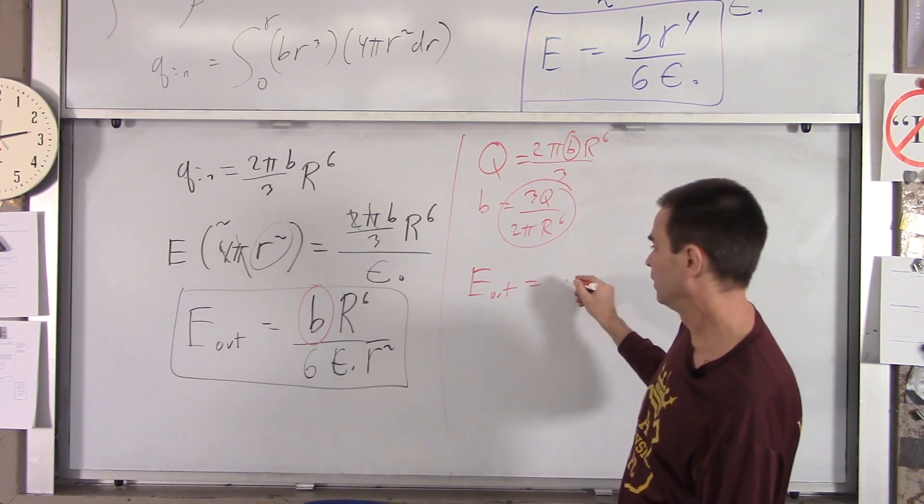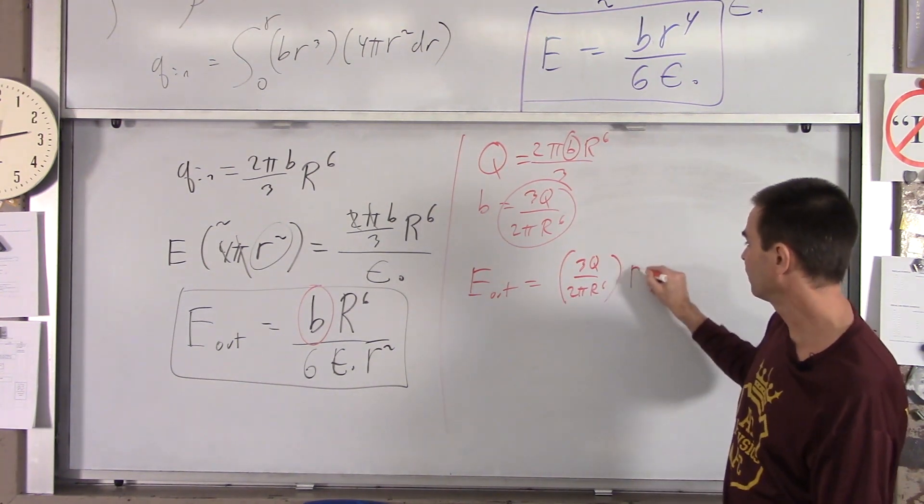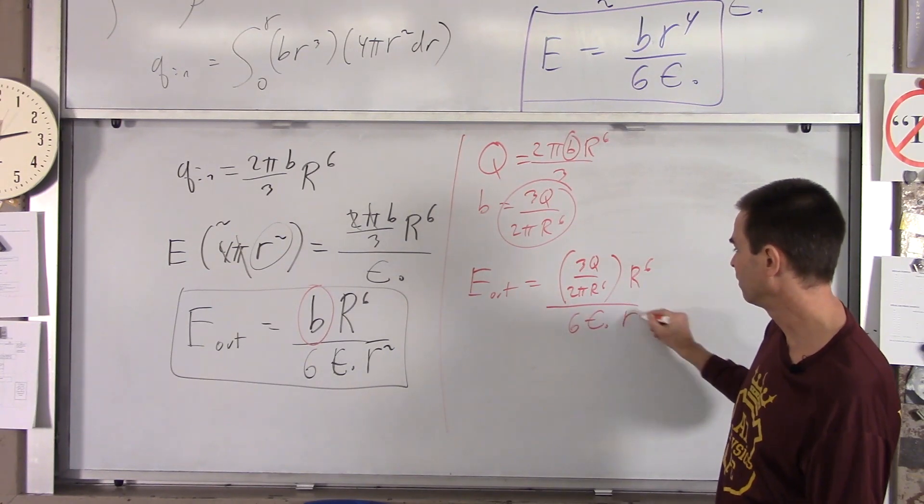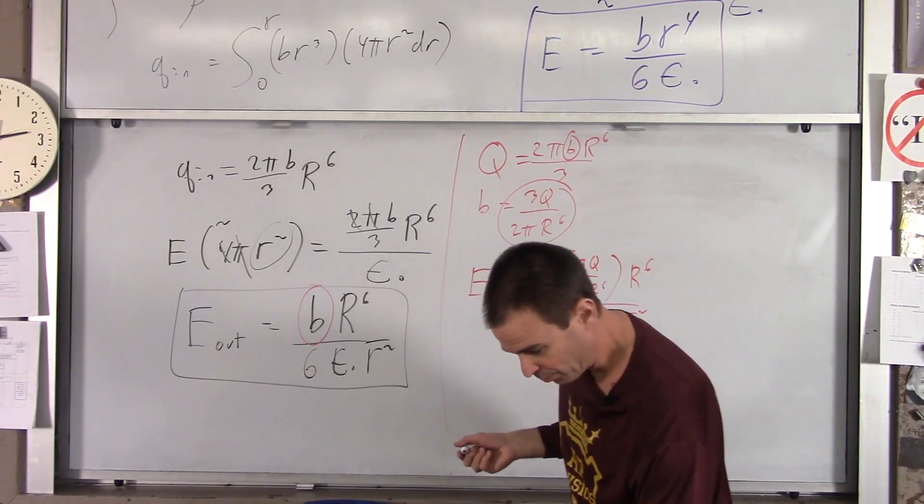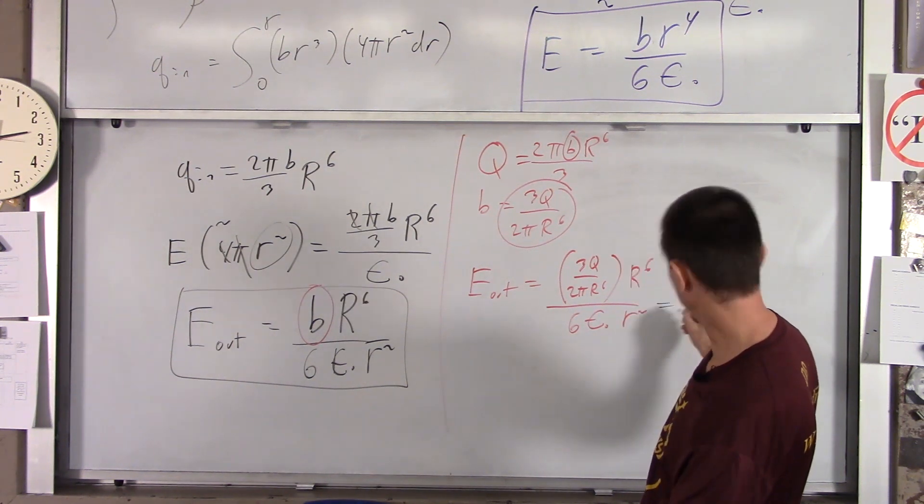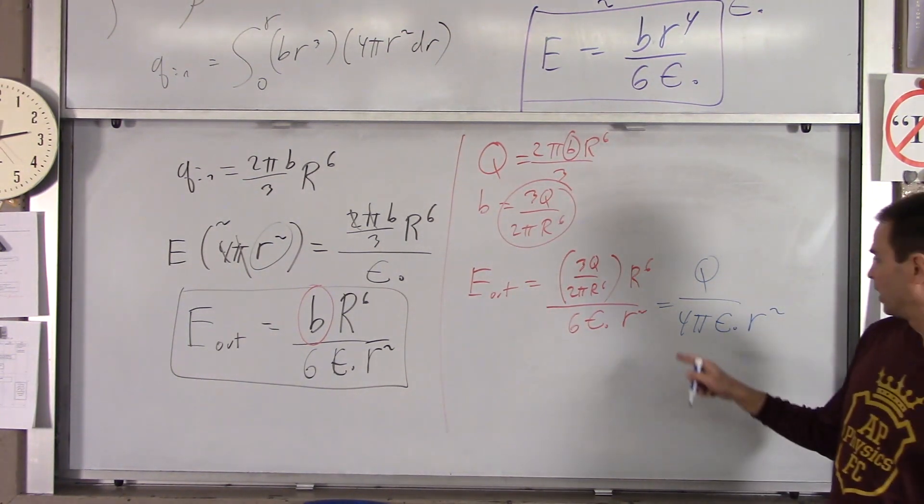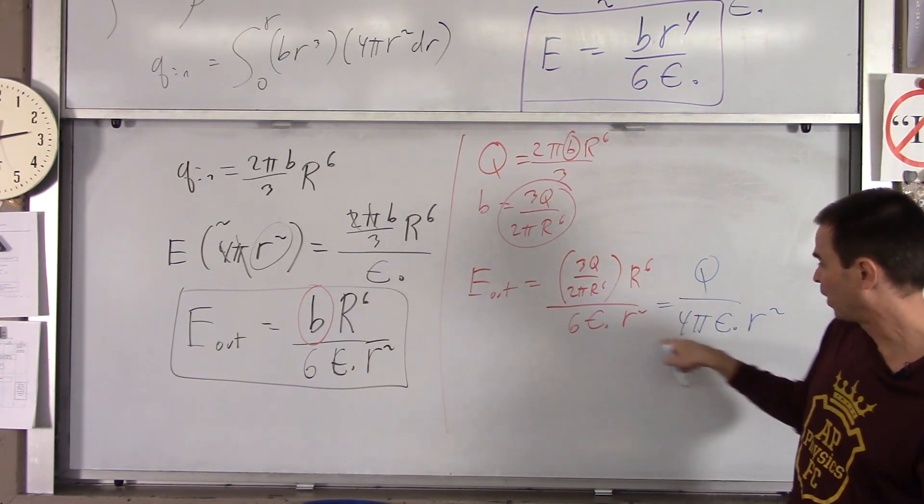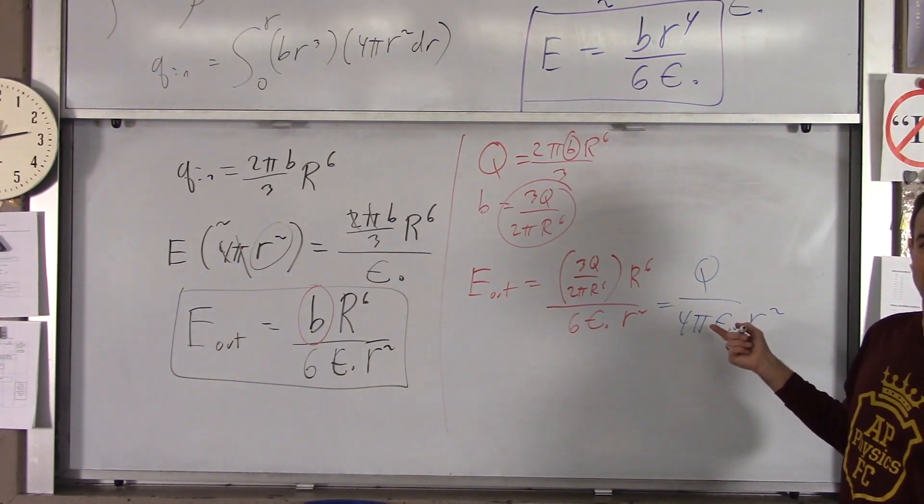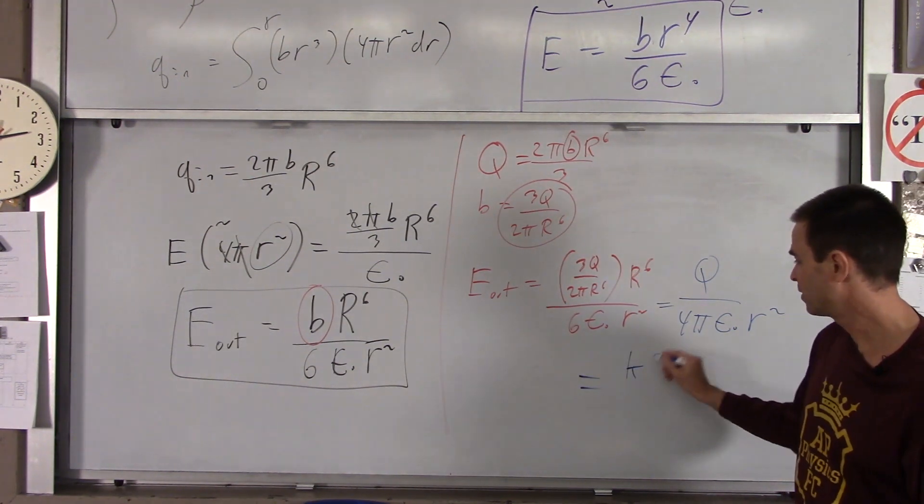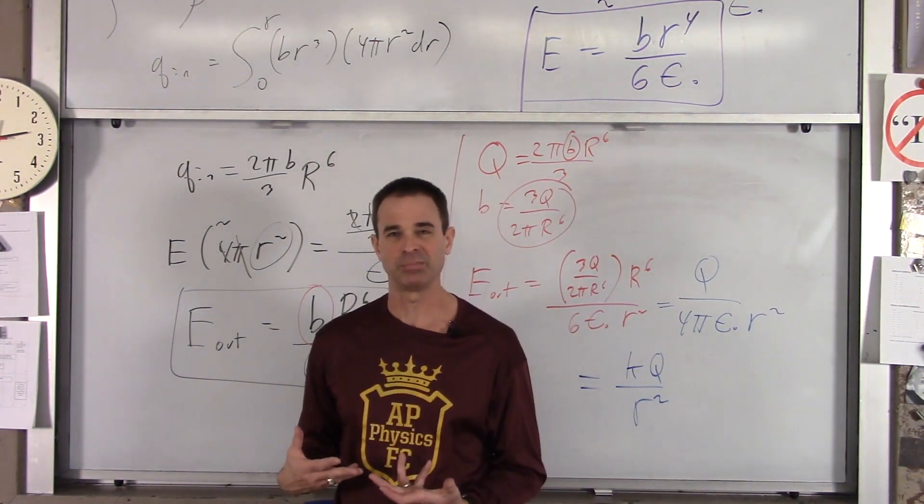And if we do that, check out what happens. E_out equals b, which is 3q over 2 pi r to the sixth times r to the sixth over six epsilon naught little r squared. Bunch of stuff cancels here. So you end up with q over 4 pi epsilon naught little r squared. So you've got a 12 down here, 3 over 12 is 4. Your pi is down here. The r of the sixth drop out. So you end up with this, and you know that k is 1 over 4 pi epsilon naught. So you get kq over r squared, which is as it should be. If you're outside the fuzzy ball charge, it should behave like a point charge. And sure enough, it does.